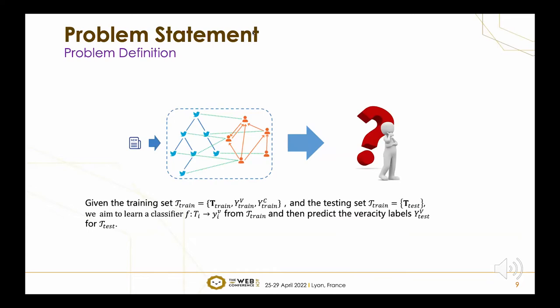The fake news detection on social media can be formulated as a two-class graph classification problem. Given the social context of a news event, we aim to predict its veracity. Formally, given the training set with veracity labels and topic labels, we aim to learn a classifier from the training set and then predict veracity labels for the testing set.